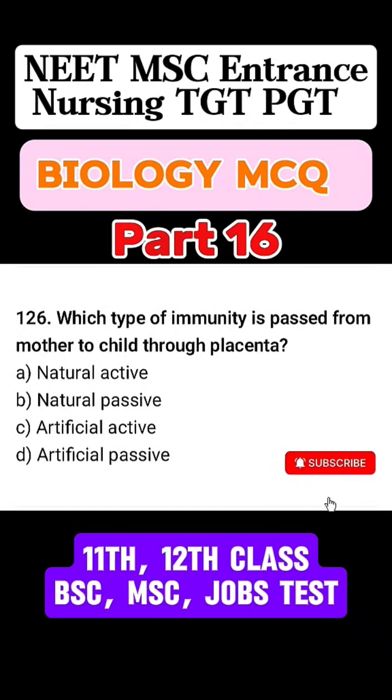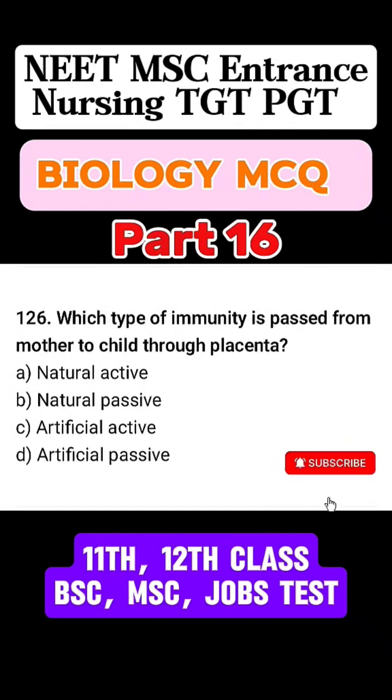Question 126. Which type of immunity is passed from mother to the child through the placenta? Correct answer is option B. Natural passive immunity.